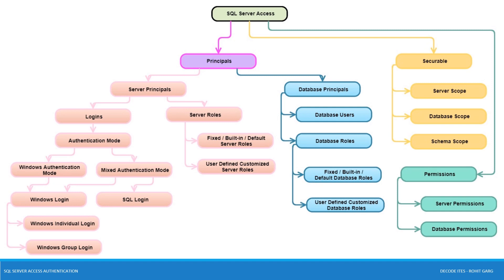SQL Server Principals has two components: logins and server roles. Logins are part of server scope security principles used to connect and access SQL Server — in other terms, credentials like user ID and password, token, or certificate-based access to your data. Logins are of two types in SQL Server: Windows Login and SQL Server Login. Windows Login can again be of two types: Individual Login and Group Login. Individual Login means logins added directly in SQL Server for access. Windows Group means the group is added in SQL Server for access and all logins part of that group will have indirect access to SQL Server.